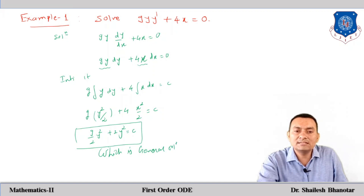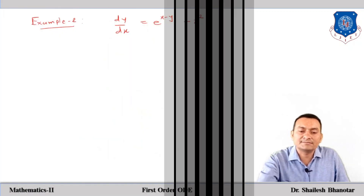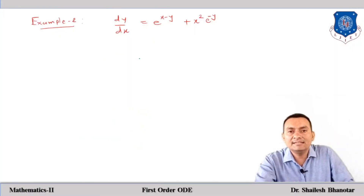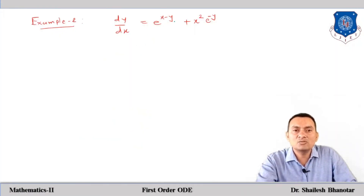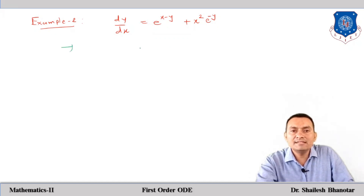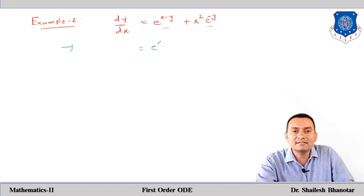It is called the general solution because there is only one arbitrary constant and the differential equation has order 1. Now consider the next question: dy/dx = e^(x−y) + x²·e^(−y). To check if it is separable, we rewrite: e^(x−y) = e^x·e^(−y), so the right-hand side becomes e^(x)·e^(−y) + x²·e^(−y).